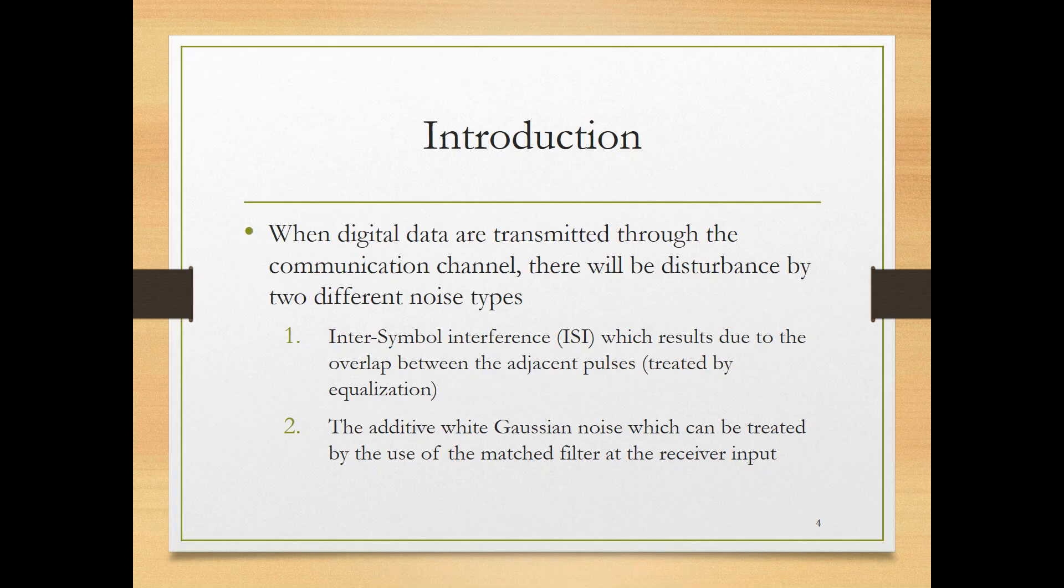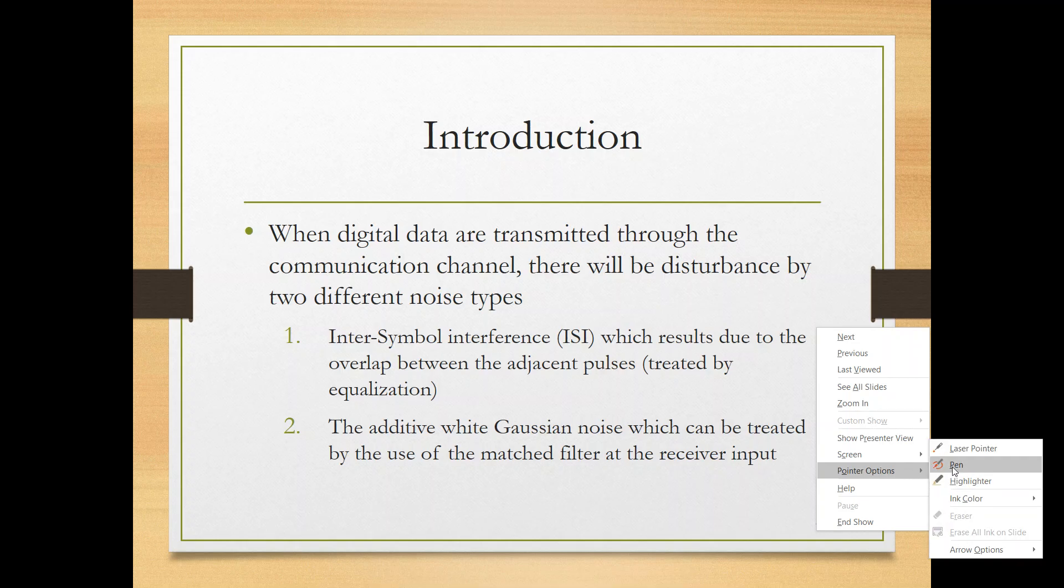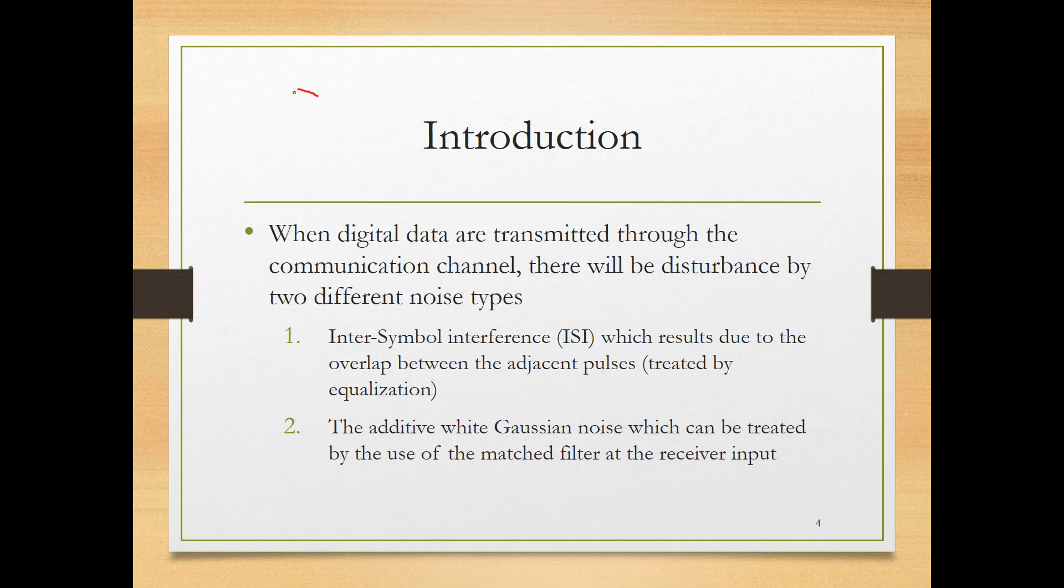First you will have inter-symbol interference due to two reasons: due to the filter design at the transmitter or due to the channel at the receiver. So when you transmit your signal, this is your signal, and you have here filter at the transmitter. When it passes your signal through the filter, the filter might cause inter-symbol interference and also you have the channel, the wireless channel here. The channel itself if it has reflections from different directions reaching the receiver at different delays then it might cause inter-symbol interference.